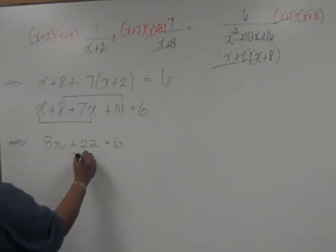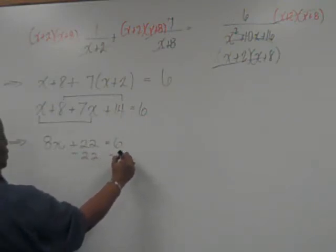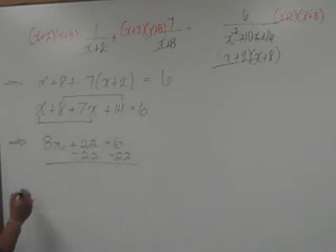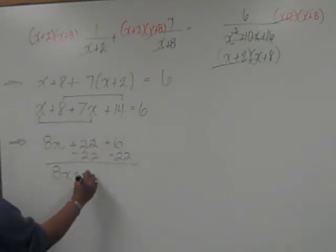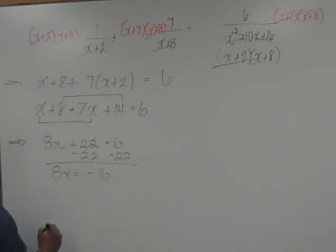Next, we'll subtract 22 from both sides. And we find that we have 8x equal to negative 16.